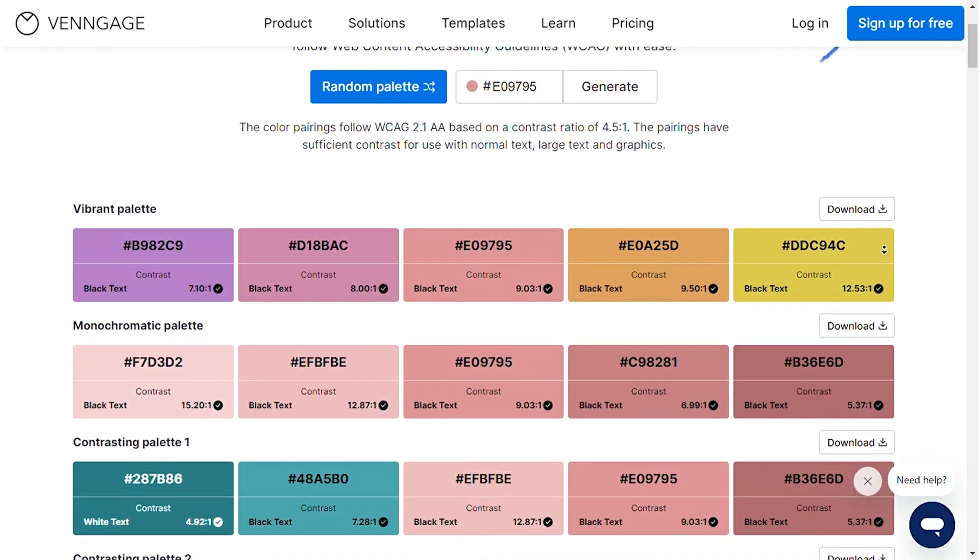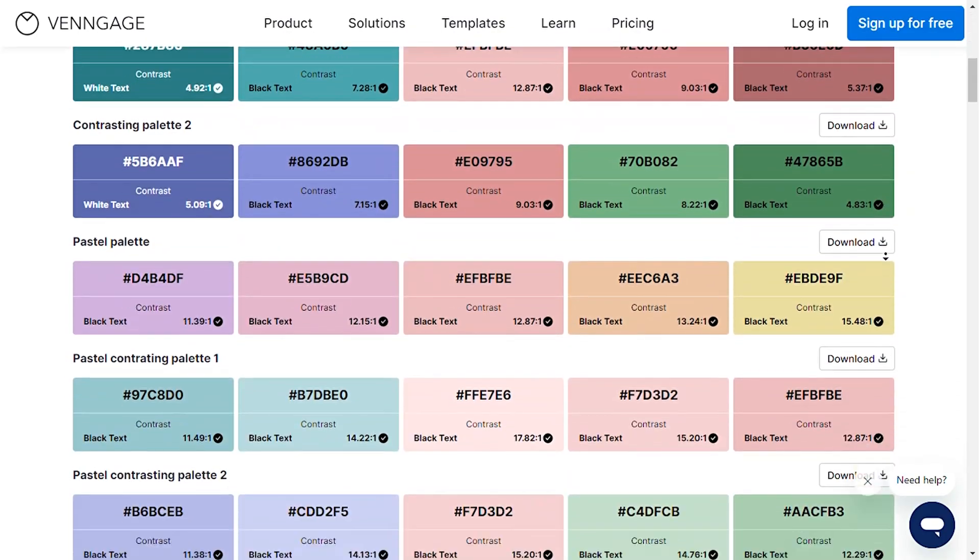If you don't have a pre-planned accessible color scheme, you can generate one for free using Venngage's Accessible Color Palette Generator.